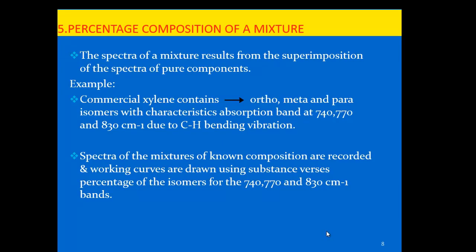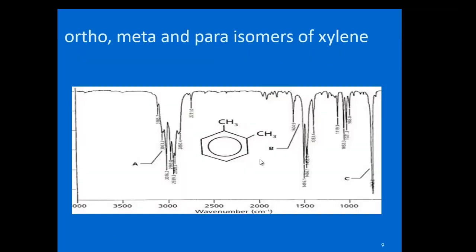The fifth application is determining the percentage composition of a mixture. For example, commercial xylene contains ortho, meta, and para isomers, with characteristic absorption bands at 740, 770, and 830 per centimeter respectively, due to C–H bending vibrations. By taking spectra of known compositions and comparing, we can determine the percentage composition of each isomer — ortho, meta, and para — in the commercial xylene sample.